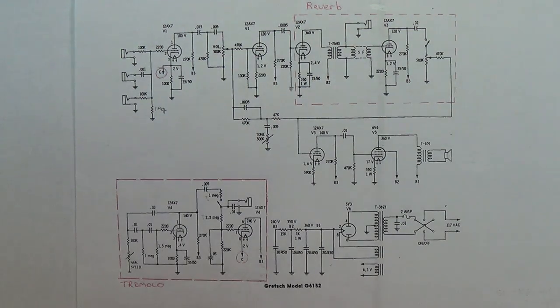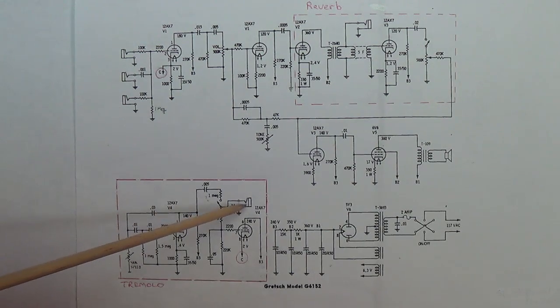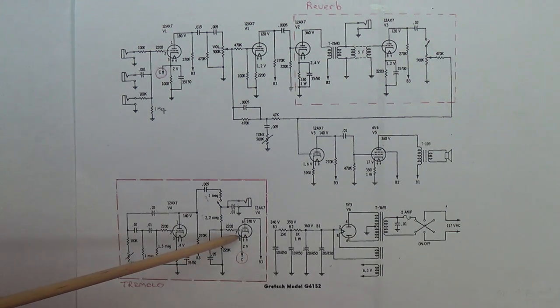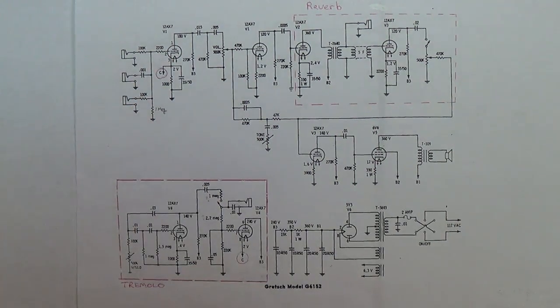Okay now let's look at a proposed change for the tremolo circuit. As we see here it has a 500k pot for speed control and over here it has the foot switch for remote on off but there is no intensity control. So what I'm going to do is insert one in this line, the C line here that runs up to the cathode of the first 12AX7.